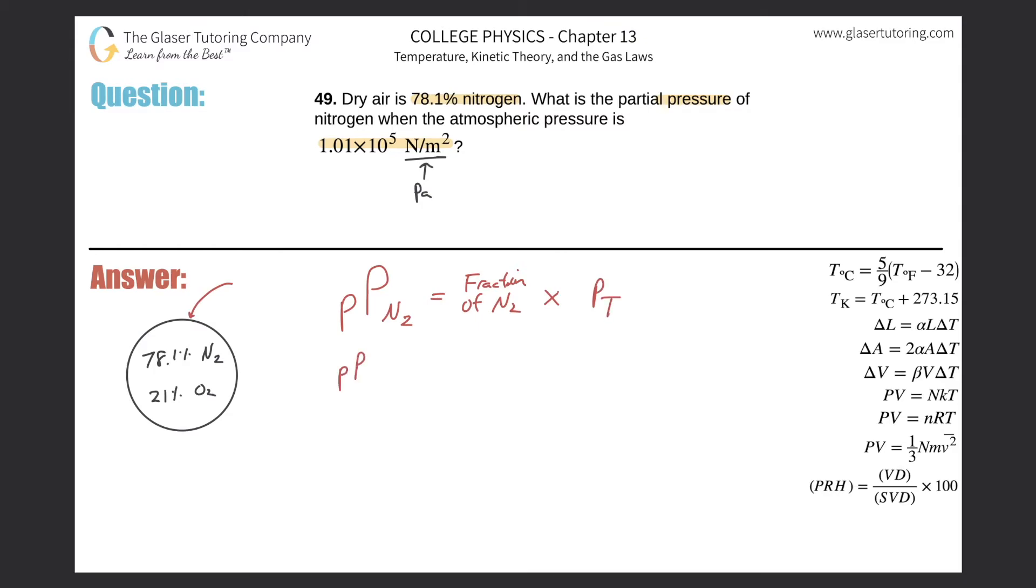So this problem is relatively straightforward, that the partial pressure of N2 will be equal to the fraction of N2. Now they told us a percent, but we know how to, when I say fraction, you can also think about it as decimal. So this would just be 0.781. You know, you're converting percents to decimals here. That should be straightforward.